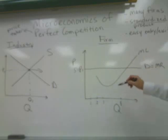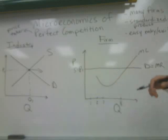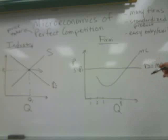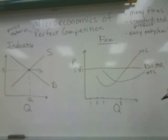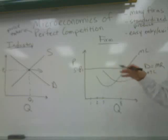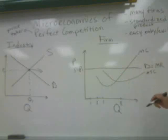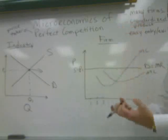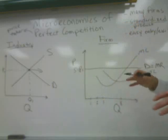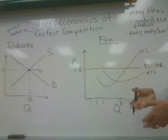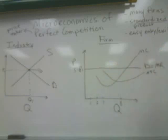Another relevant curve is the average total cost curve, which has a similar U-shape to the marginal cost curve. The marginal cost curve will intersect the average total cost curve at its minimum point — a mathematical necessity because the margin is the change in the total, and the total drives the average. When the margin is below the average it pulls the average down; when they intersect they are equal; and when the margin rises above the average, it pulls the average up.